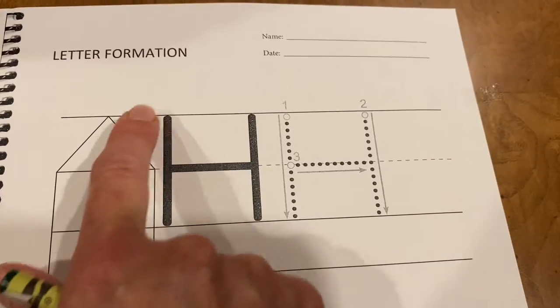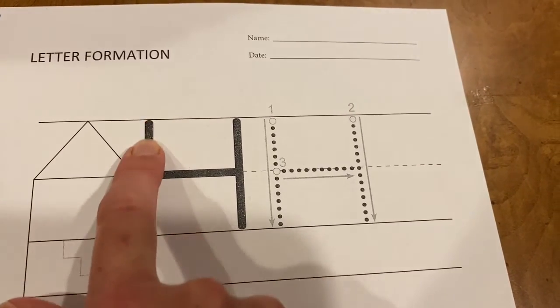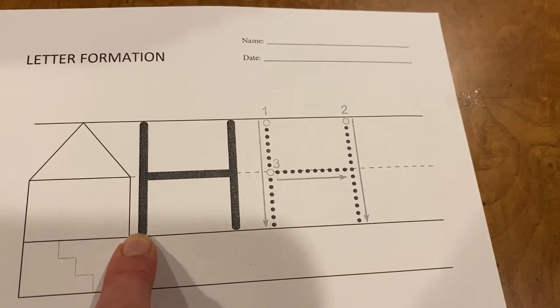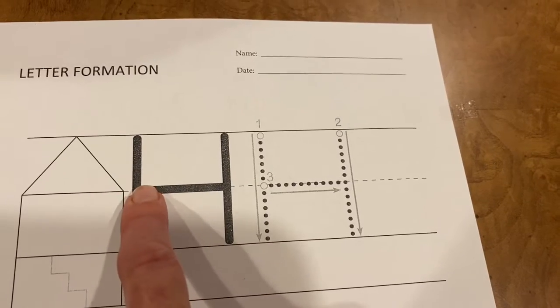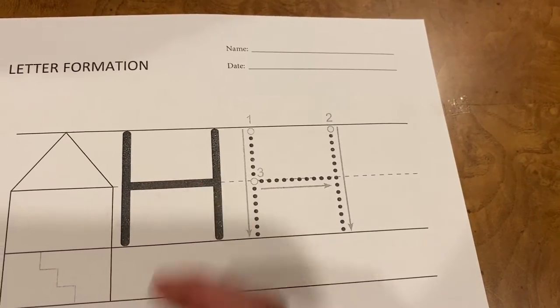Uppercase H starts at the tippy top and comes down. Come across, start at the tippy top and come down. And then on the middle line we do a line across.